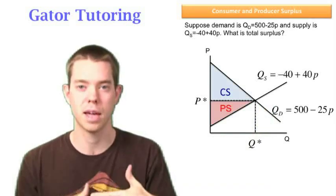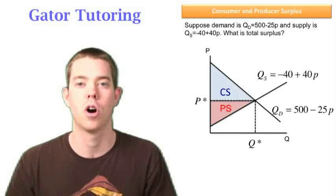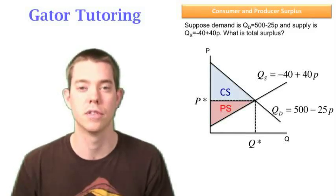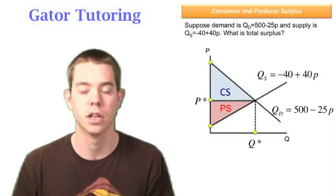You want to remember that demand is value and supply is cost. So that will help you always in drawing your producer and consumer surplus. So we need to solve for the area of these two triangles. Well, we need these four yellow points in order to do that.